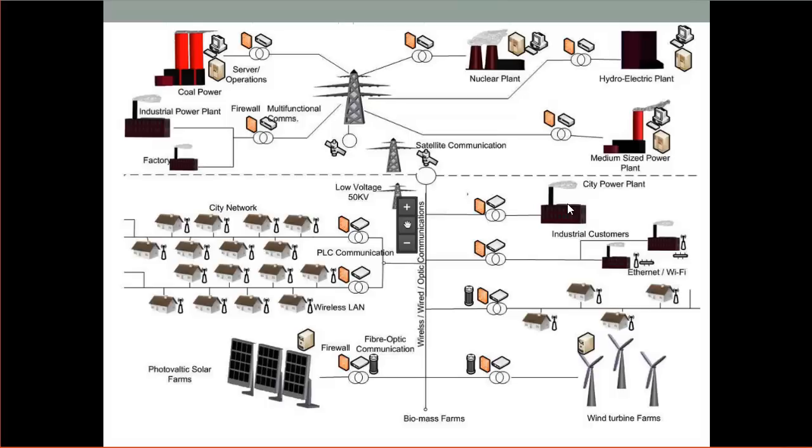Rather than me building another power plant, it'd be a lot cheaper for me to shed some of my load. And so I'd like to give you a curtailable rate and I'd like to be able to cut off your power, give you a 15 minutes notice that I'm going to cut off your power and be able to cut off power to part of your plants. So we're seeing that kind of thing happening.